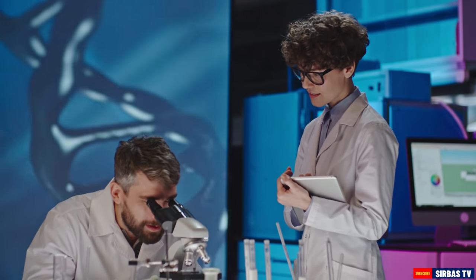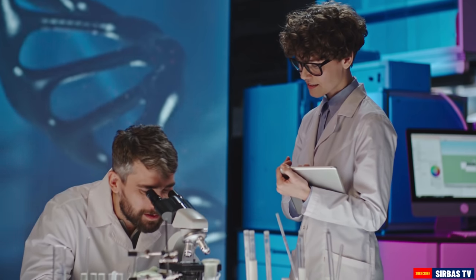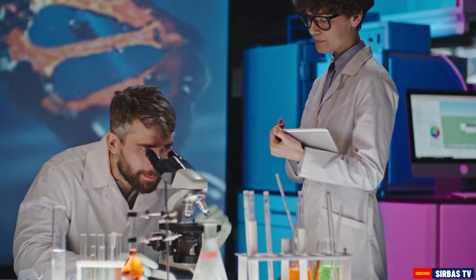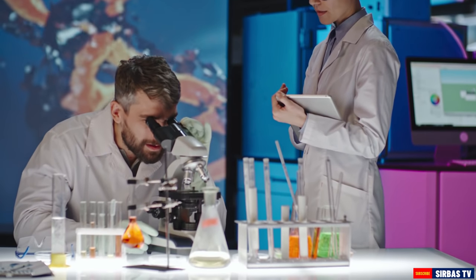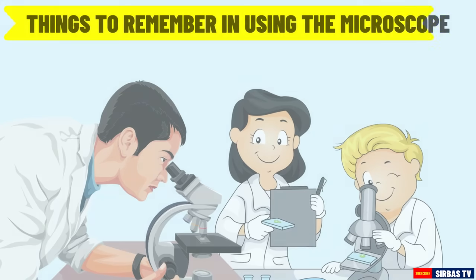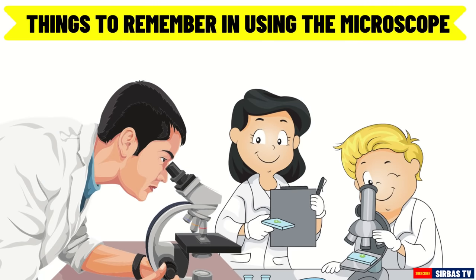A microscope is a powerful tool in the field of biology. It allows us to observe and study objects or organisms that are too small to be seen by the naked eye. In our previous lesson, you learned that a microscope has different parts and each part has a specific function. Before we study how to observe an object using a microscope, let us first study the different ways on how to take care of a microscope. This will prevent you from doing things that may damage the microscope.